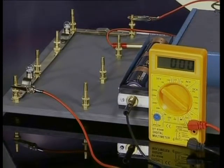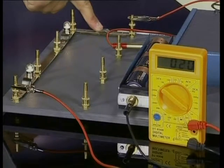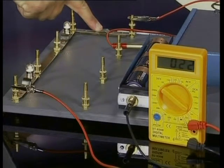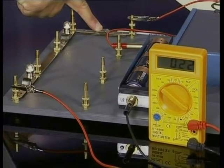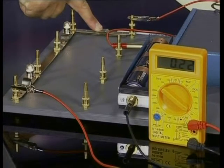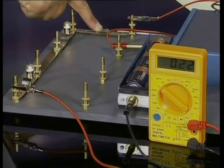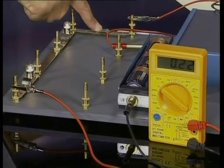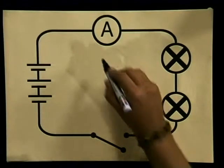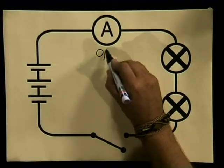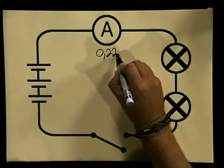I am now going to close the switch. We can see that current is passing through because the light bulbs are glowing. Now let's take a reading on the ammeter. It is 0.22 amperes. So our ammeter reading is 0.22 amperes.